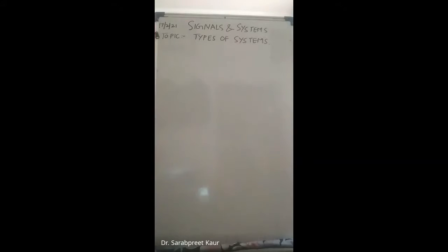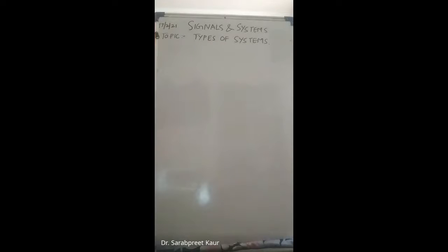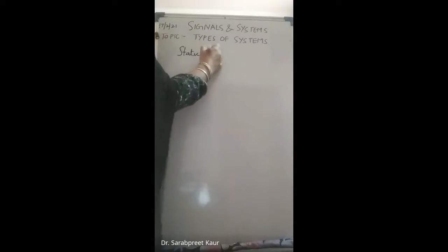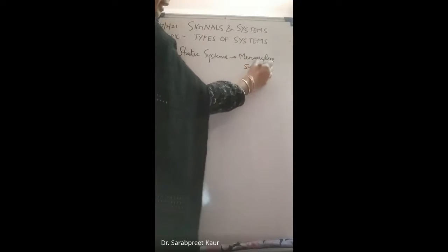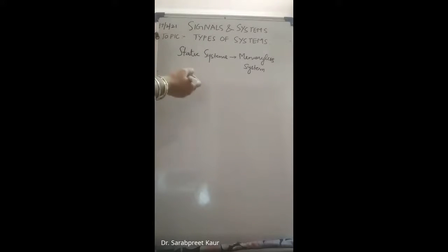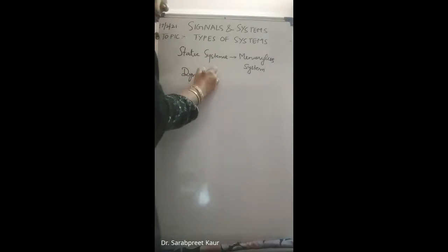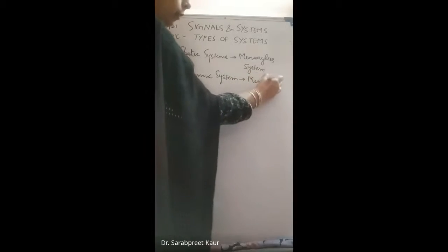Good morning students. Today we are going to continue with the topic of types of systems. In the previous lecture we discussed the static and dynamic system — if the output of the system depends only on the present input, it is a static system. If it depends on past as well as future inputs, it is a dynamic system. Static systems are also known as memoryless systems, because the output depends only on the present input, so there is no need to save samples. Dynamic systems are memory systems, or systems with memory.